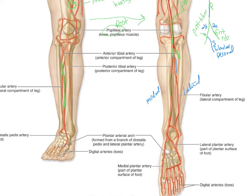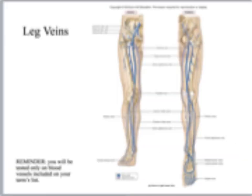You need to memorize that branching pattern and look at it on the models, because people get confused there — it's a common place for mistakes. We're not learning any of the smaller branches beyond that, so you can scratch those off. Now with our veins, it's quick and easy.